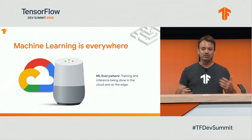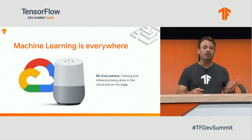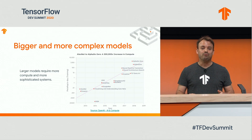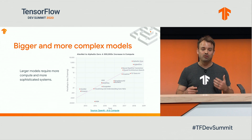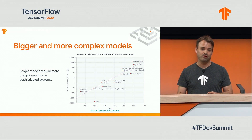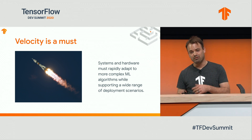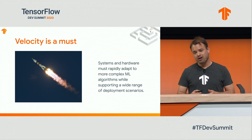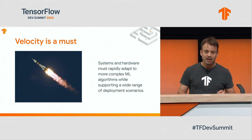I don't think I need to tell anybody in this room that machine learning is everywhere. There's a wide range of deployments happening in the industry today — inference and training happening on the cloud and to the edge. We also have models getting larger and larger, with near exponential growth in complexity and computational requirements. If you combine the growth in different deployment strategies as well as models, velocity is a must. We need a faster, more scalable way to build infrastructure to keep up with these bigger, complex models and deployment scenarios.